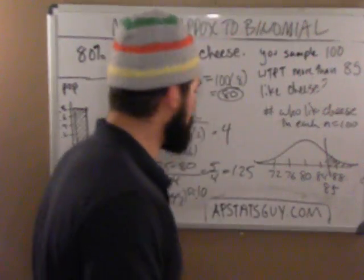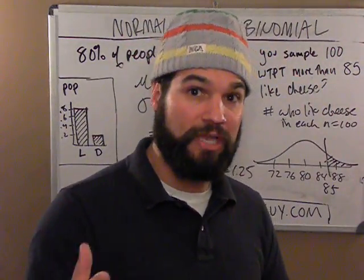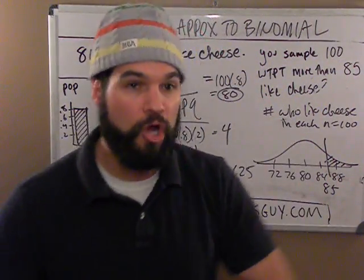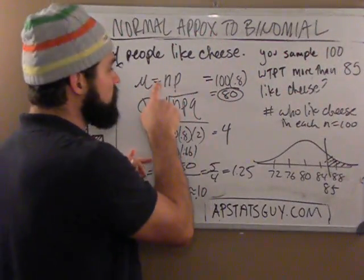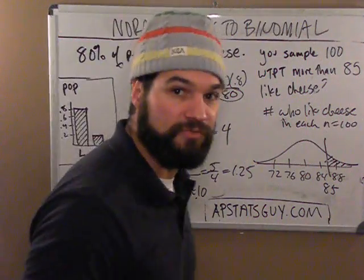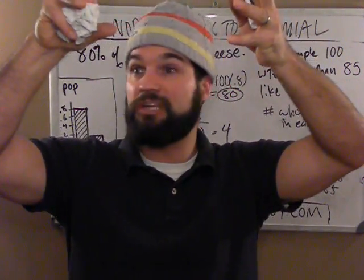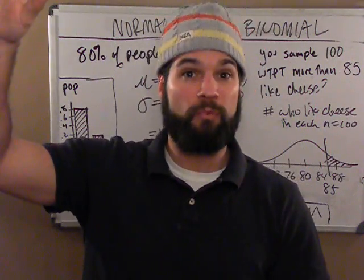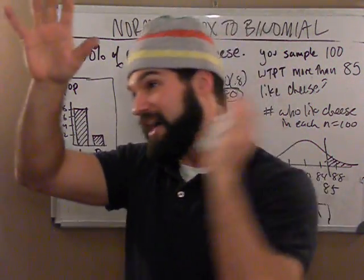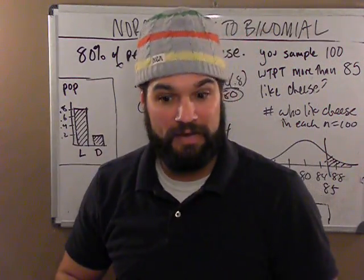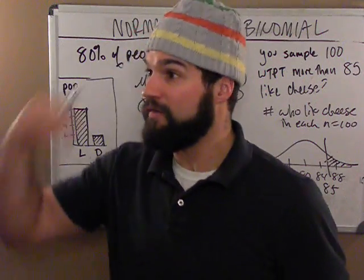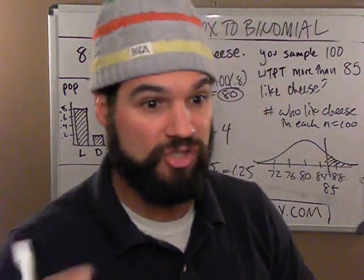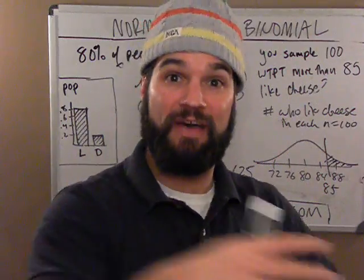So why is this the exact same thing as using p-hats? It's just some basic algebra. Here we're looking at the number of successes; the other one, we're looking at the percent of successes. If you know the number of successes and want to translate into a percent of successes, you just divide by n. Like, if I have 15 successes out of 100, I divide by 100 and it turns into 15%. Or 4 successes out of 10 is 40%. You just divide by the total number, n.